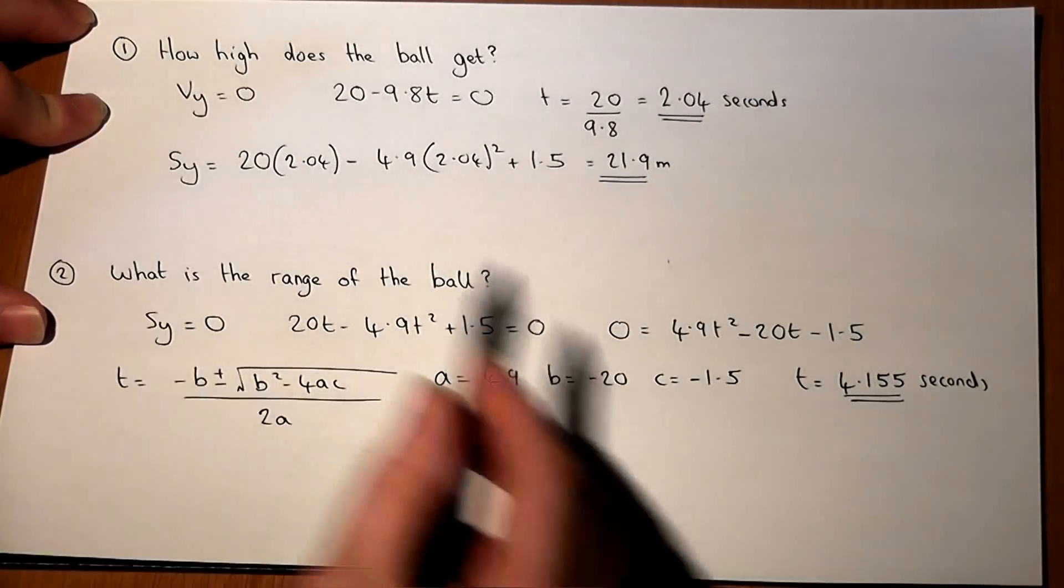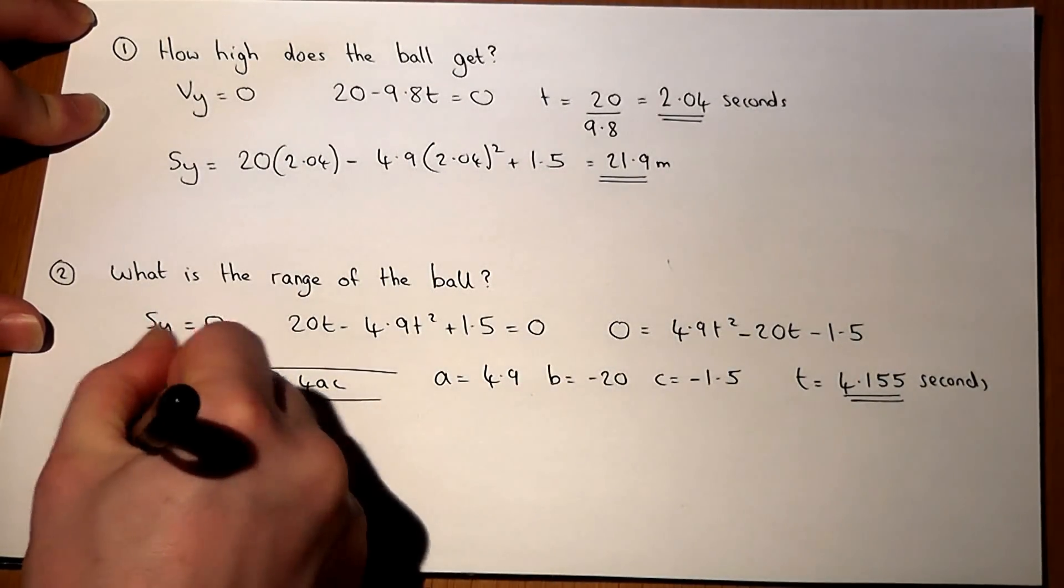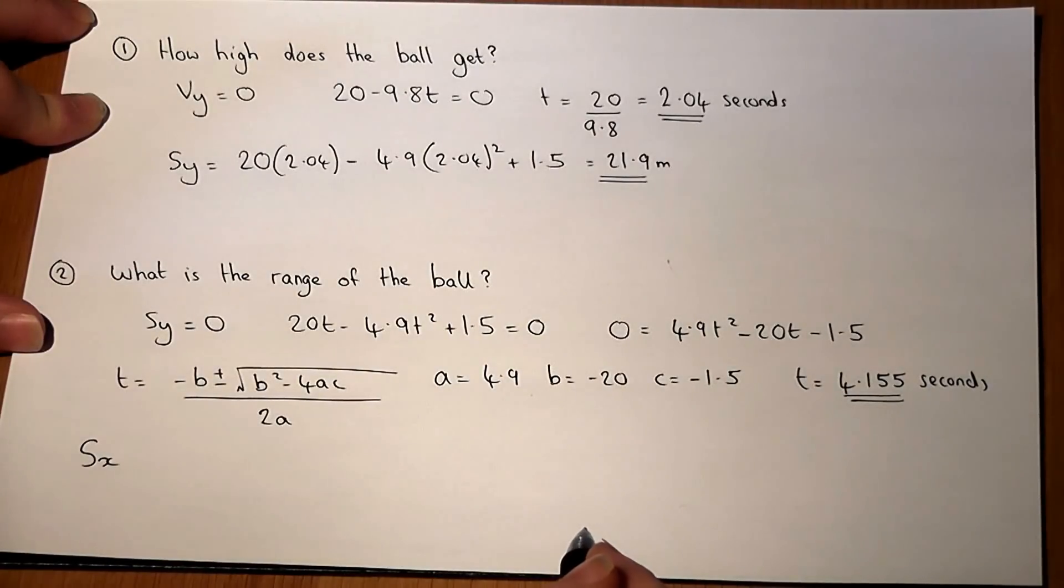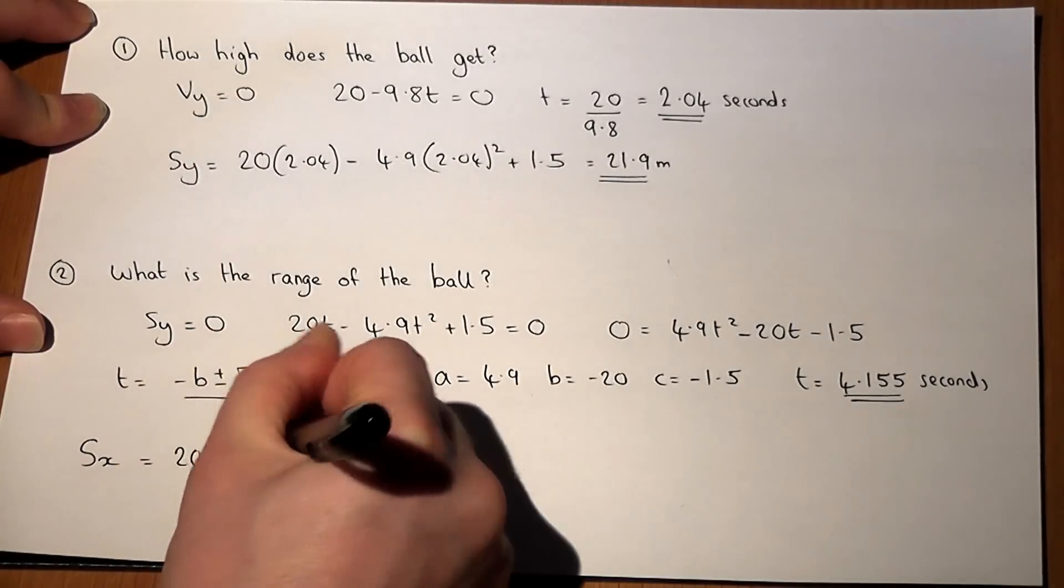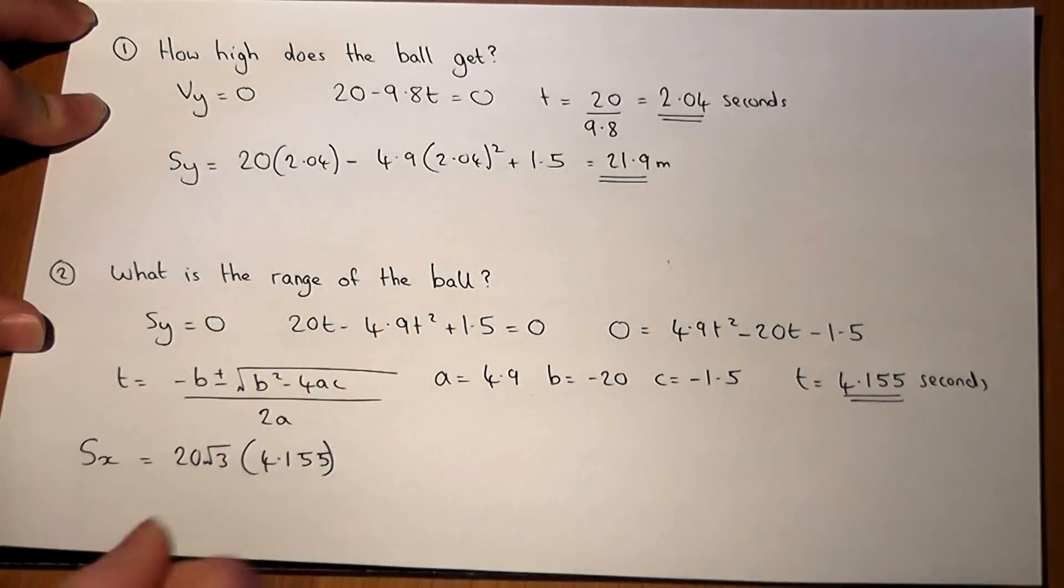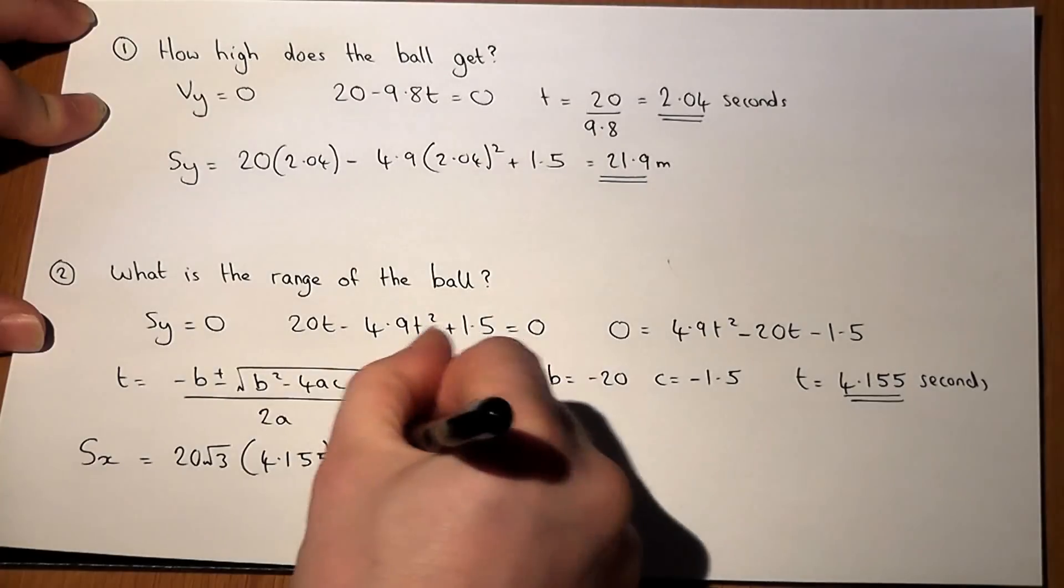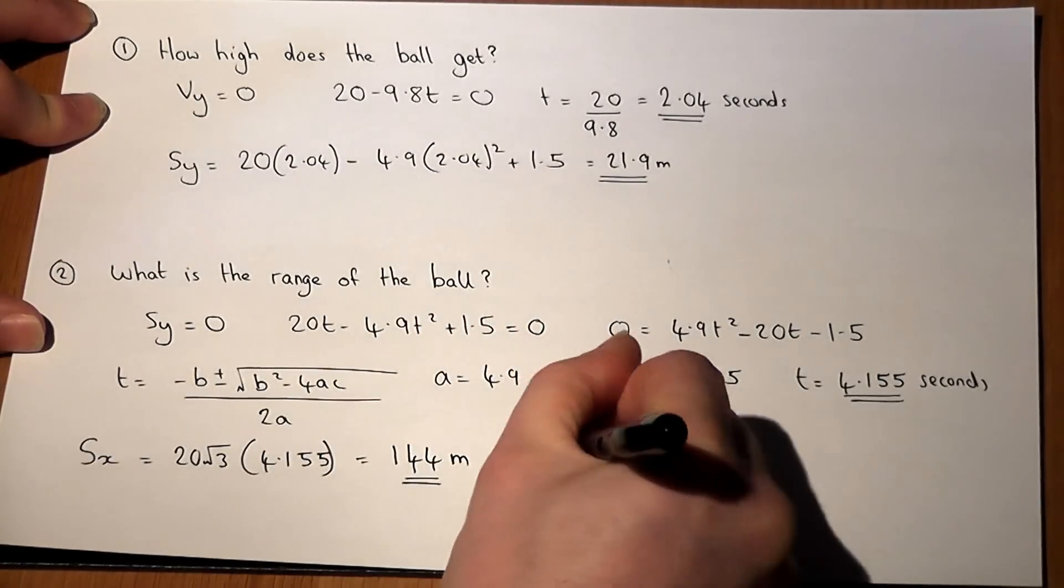But the question was, what is the range of the ball? So the question is, how far does it go horizontally at that time? So in other words, s_x was 20 root 3 lots of t, which we've now found to be that. So work that out and find it is 144 meters to 3 significant figures.